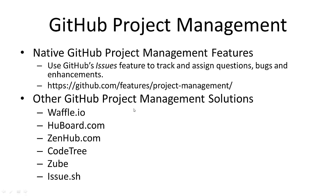There are also other GitHub project management solutions — third-party solutions: Waffle.io, Hubord.com, Zenhub, CodeTree, Zoob, and Issue.sh. These are all third-party GitHub project management solutions, so you can see there are a variety of different options available for managing projects right on GitHub.